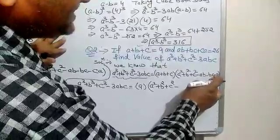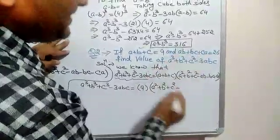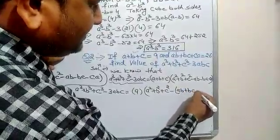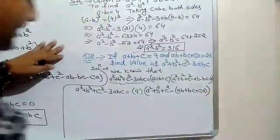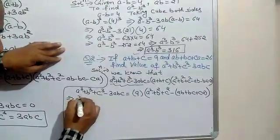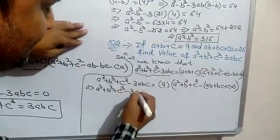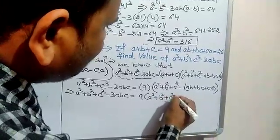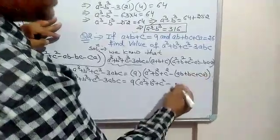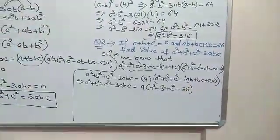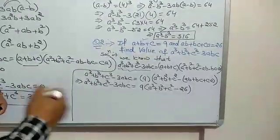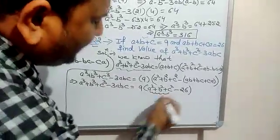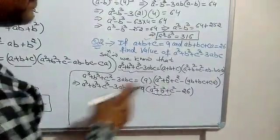Here we have minus ab minus bc minus ca. But we are given ab plus bc plus ca, so we take negative common to get minus of ab plus bc plus ca. So it further implies that a cube plus b cube plus c cube minus 3abc equals 9 into a square plus b square plus c square minus 26. But we do not yet have the value of a square plus b square plus c square, so we need to find it first.